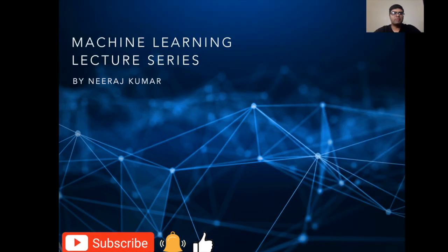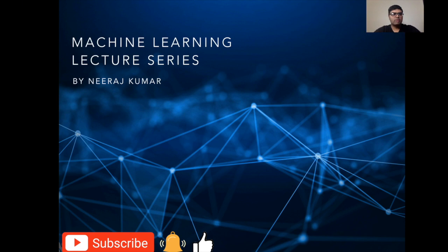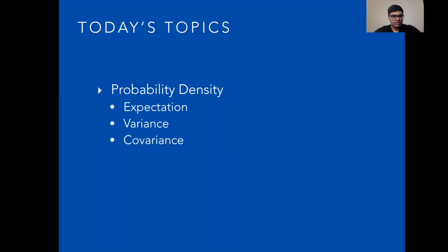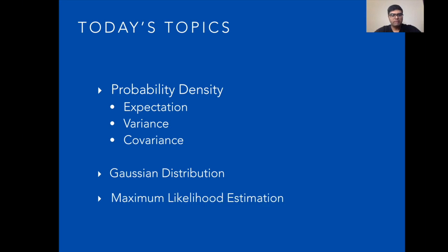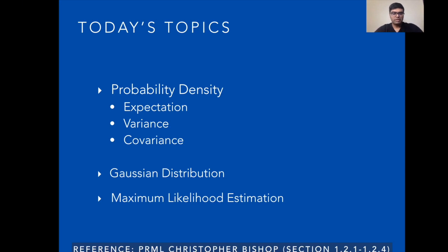Hello everyone. Welcome back to machine learning. My name is Neeraj Kumar. In the last video we discussed about basics of probability including product and sum rule of probability. If you haven't watched that video, the link is available in the description. Today we will discuss about probability density functions, their descriptive statistics including expectation, variance, and covariance. We'll also discuss about the Gaussian distribution and maximum likelihood estimation of the parameters of the Gaussian distribution. The reference for this video is Bishop's Pattern Recognition and Machine Learning.